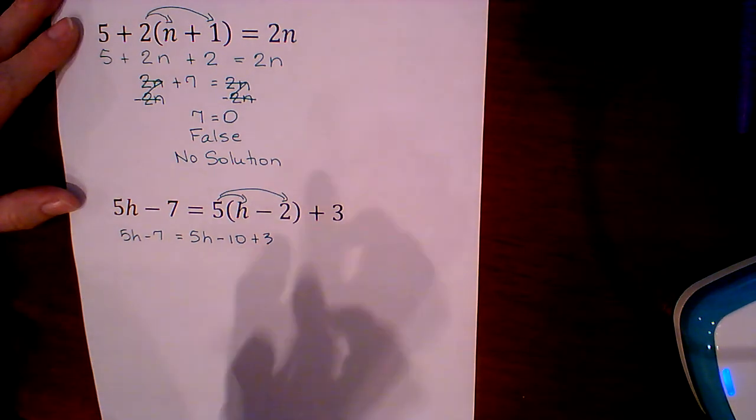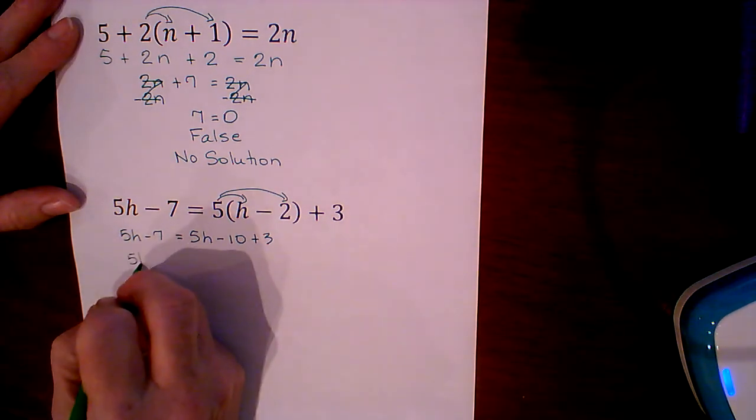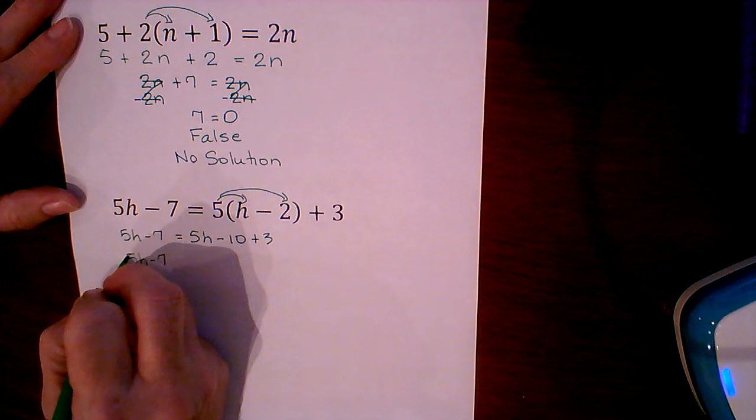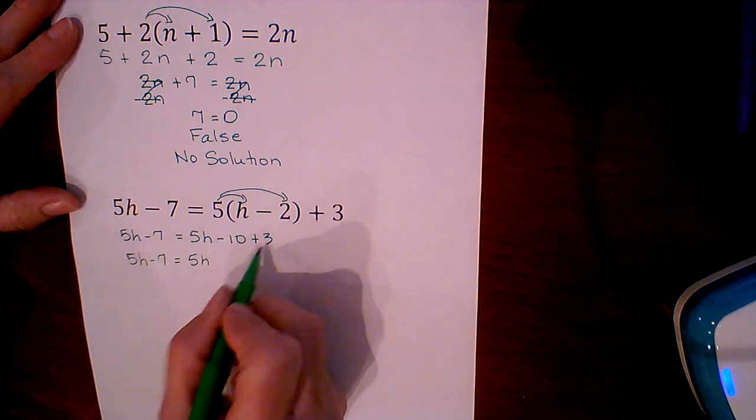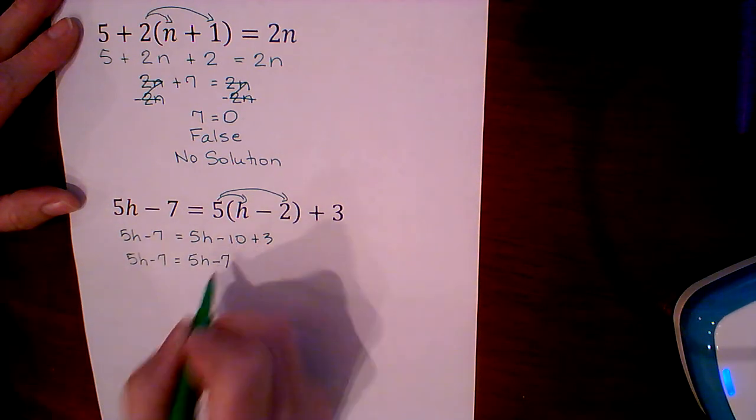We still need to simplify by combining the like terms on the right-hand side. Negative 10 and positive 3 give us a negative 7.